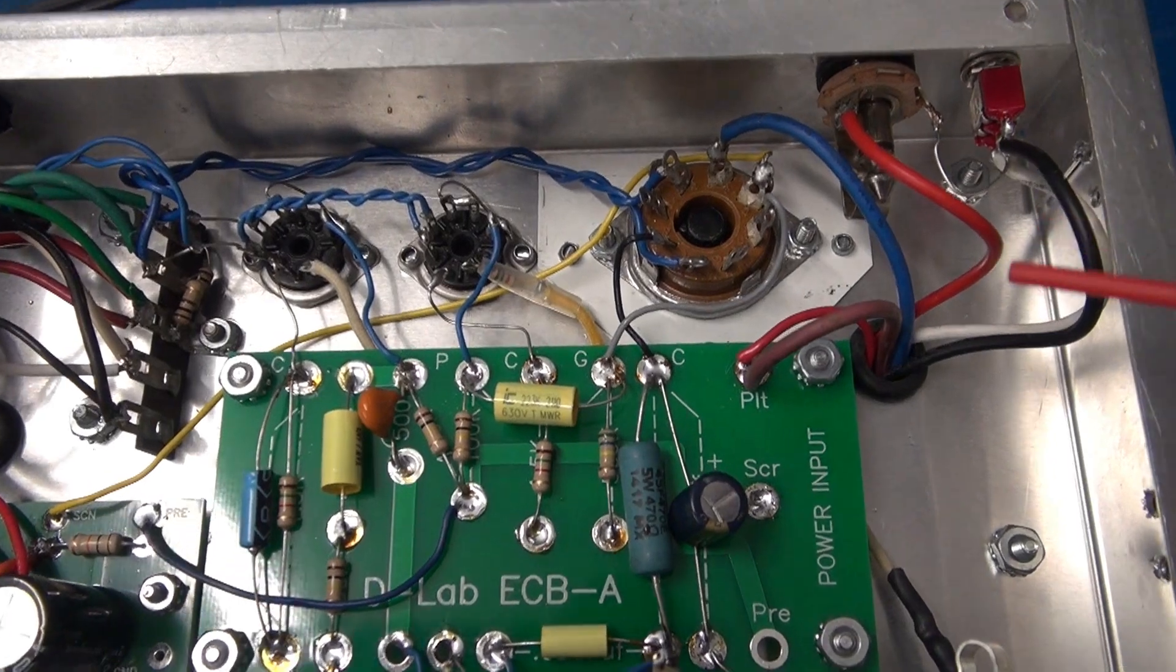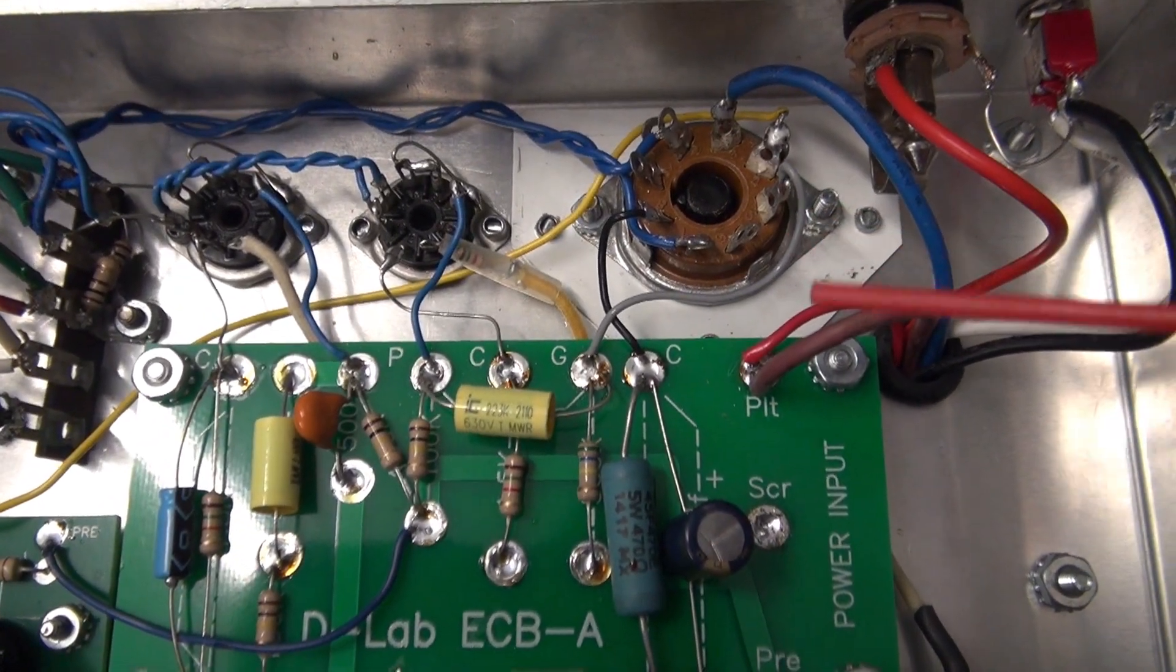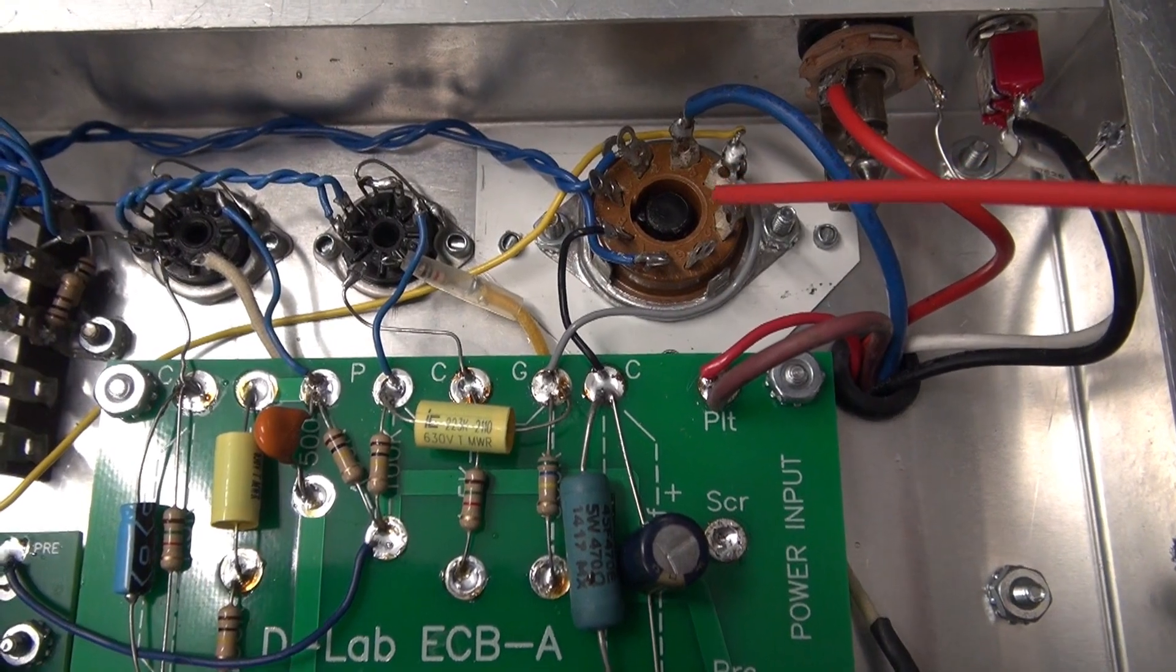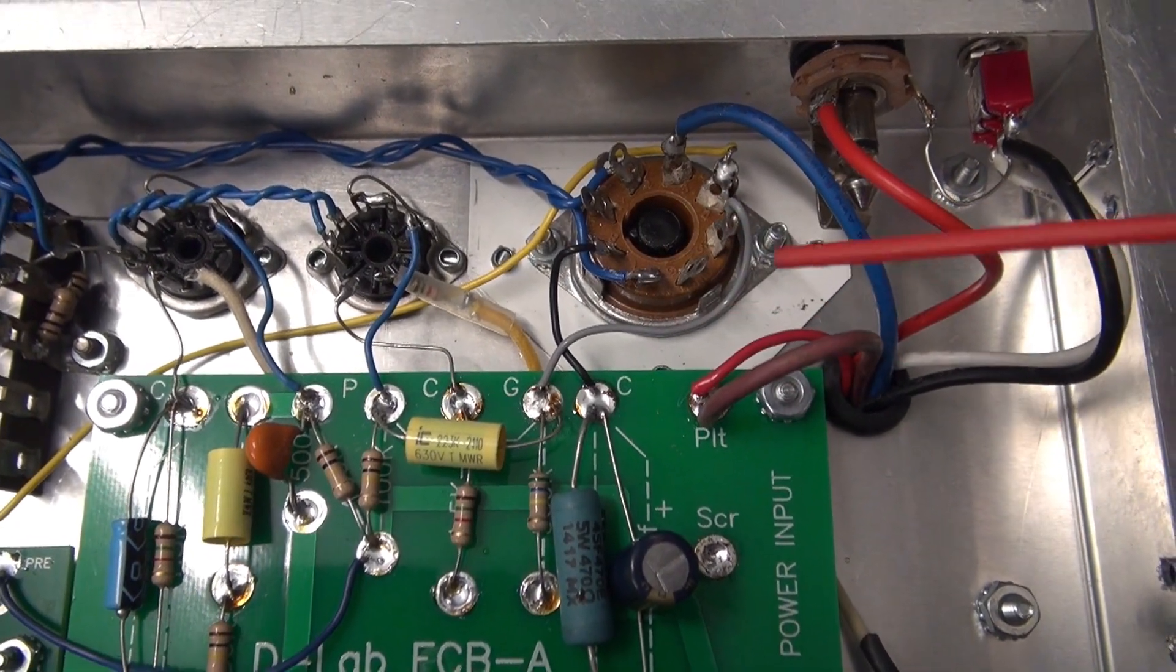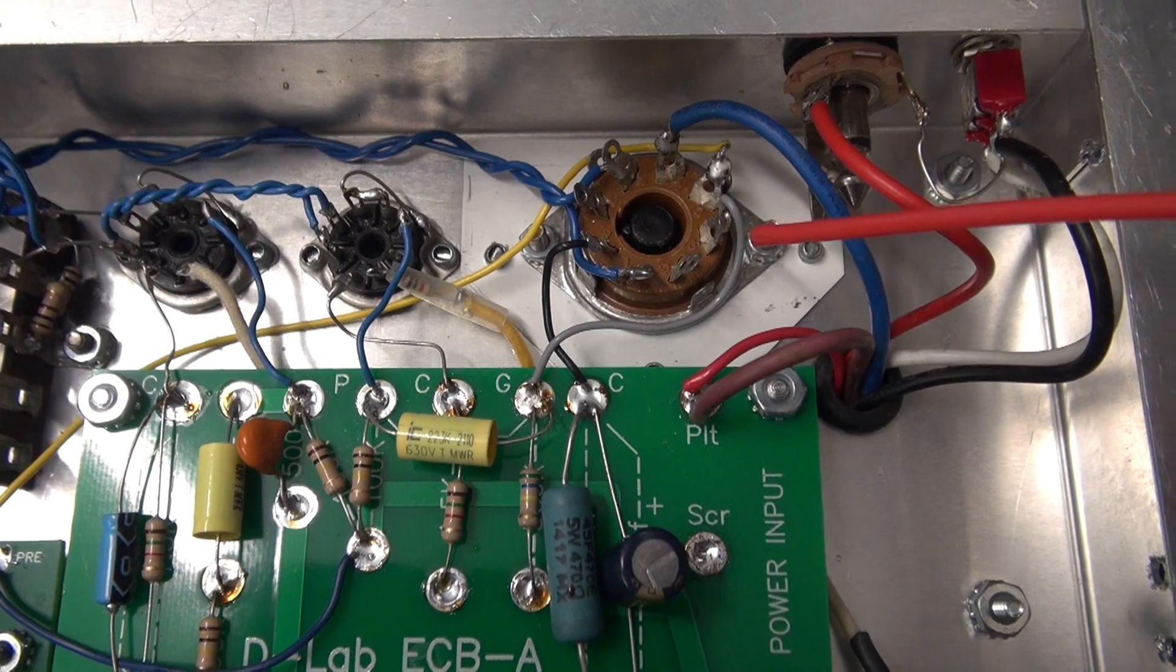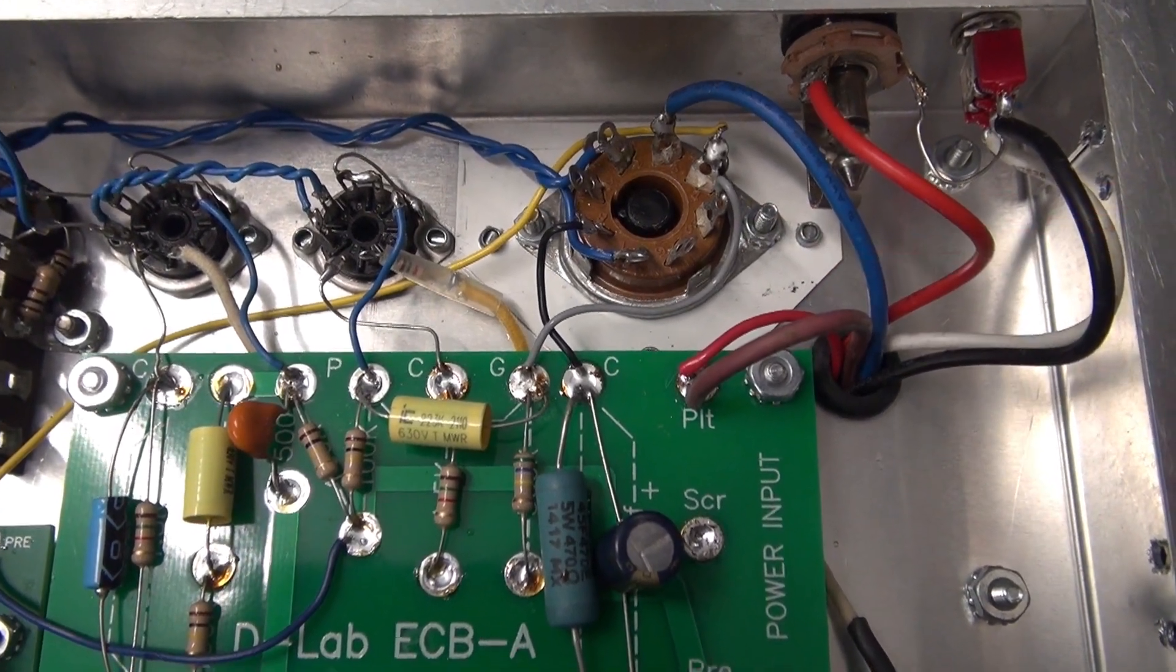So you may be wondering how can you run either of those tubes in that circuit. That's because the base configuration of the 6N3C is identical to a 6V6. So you could actually run one of these Russian tubes in your Fender Champ if you wish.